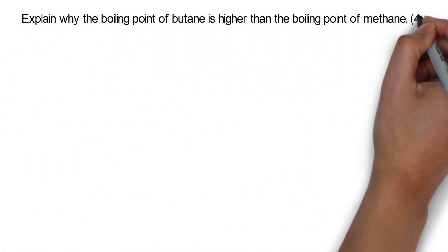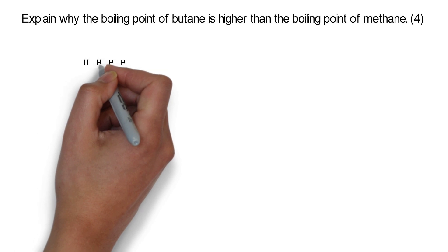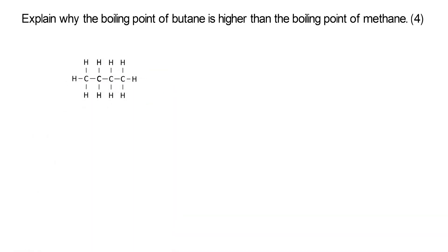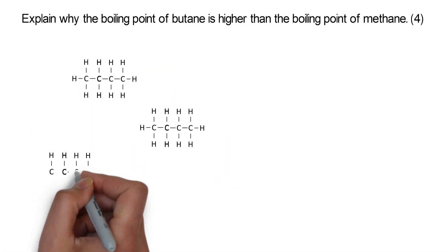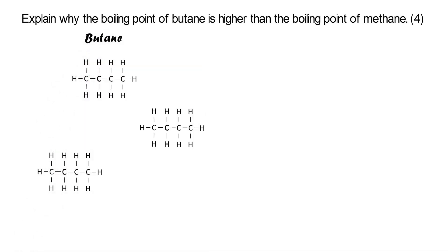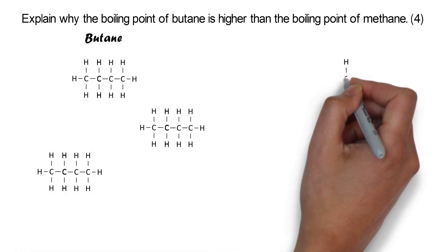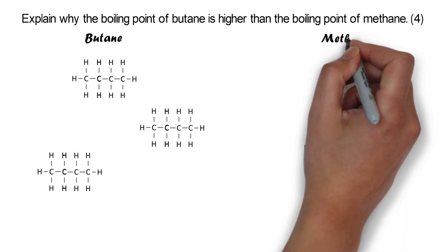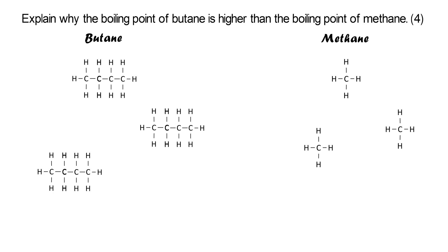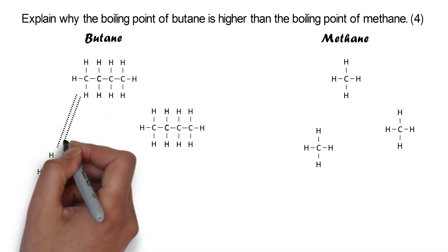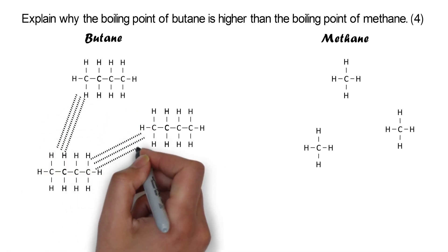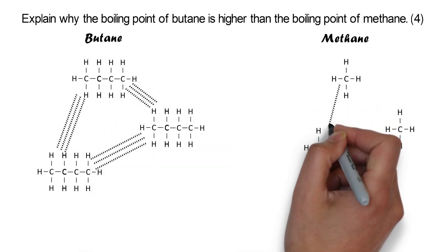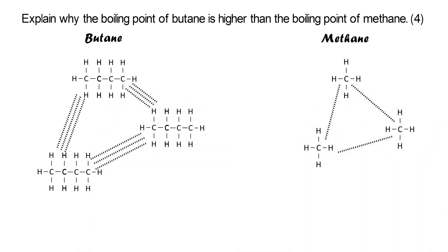Let's have a look at a question. Explain why the boiling point of butane, which has four carbons, is higher than the boiling point of methane. If we draw our butane molecules and our methane molecules, the methane molecules are going to be much smaller. Now have a look at the strength of the intermolecular forces I'm drawing for butane compared to methane — pause the video and see if you can explain why butane's boiling point is higher.